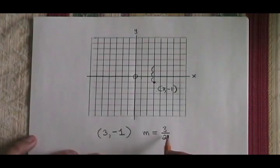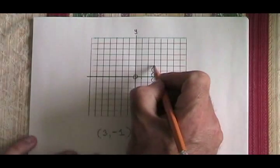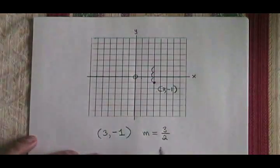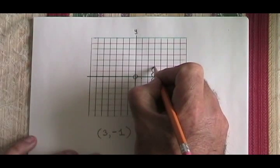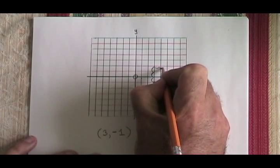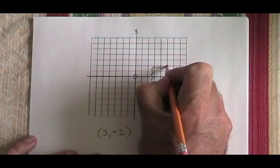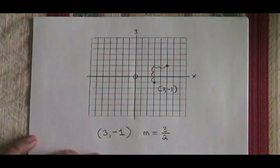Then I do the run. Not from my starting point, but from where I ended up after my rise of 3. I do a run of 2. Run is left or right movement, but it will always be to the right. So from here, I go 2 spaces to the right.